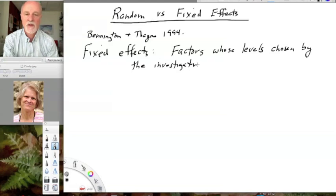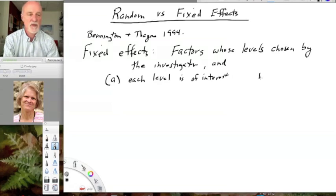So what is that? Well, that means that they have chosen those levels and, first of all, each level that has been chosen is of interest. So for example, if one sets up an experiment with low, medium, and high nitrogen levels, one actually cares about the performance of the organism in response to low, medium, and high nitrogen.